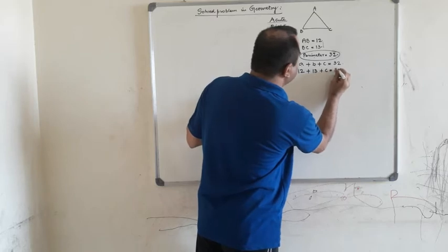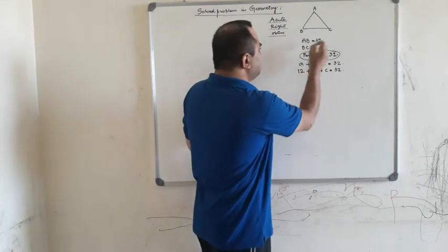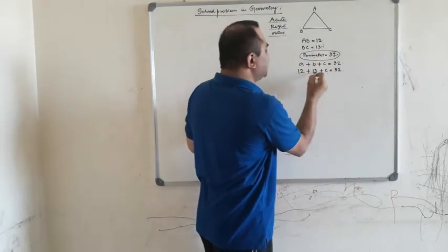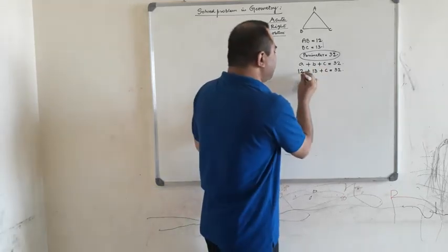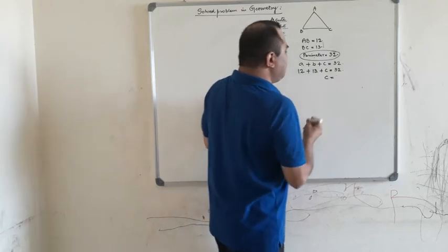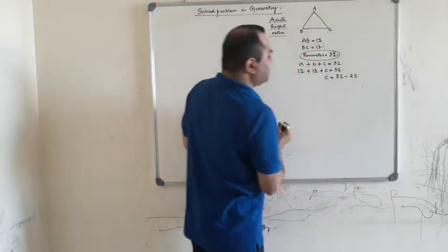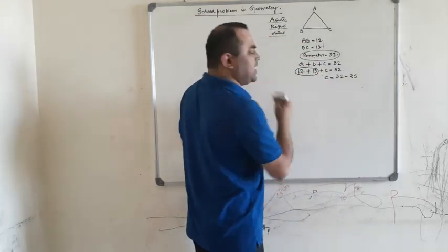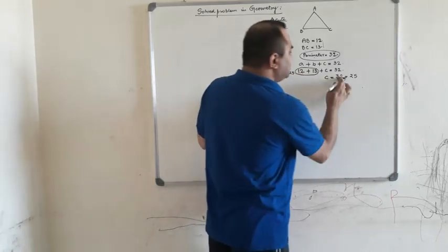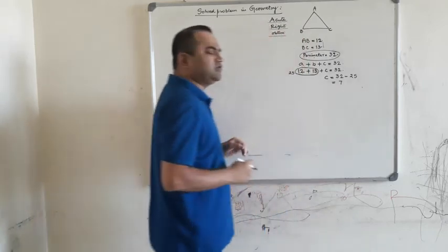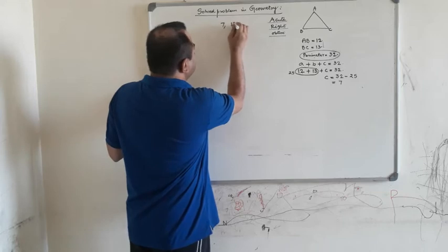The perimeter is given as 32, so the sum of these three sides is 32. The length of the third side c will be 32 minus 25 — where does that 25 come from? 12 plus 13 is 25. Take it to the right side, so 32 minus 25 is equal to 7.